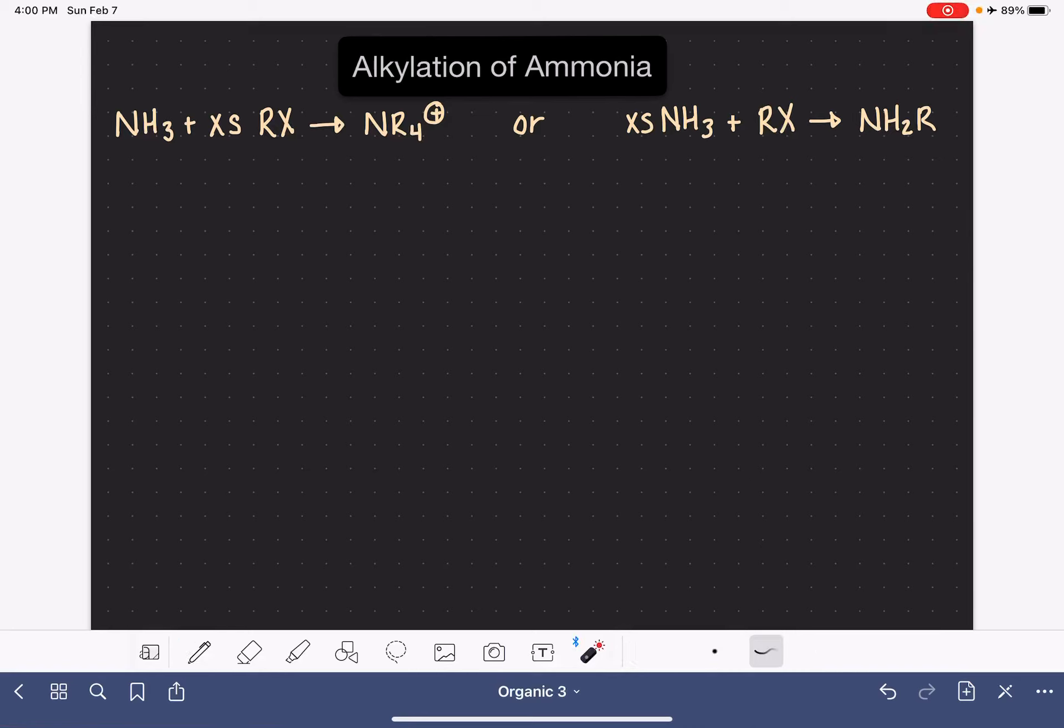The alkylation of ammonia is an SN2 reaction between ammonia and an alkyl halide. There are two possible outcomes for this reaction. You will either make NR4+, a quaternary ammonium ion with four alkyl groups on it, or you will make a primary amine. These two outcomes can be controlled by